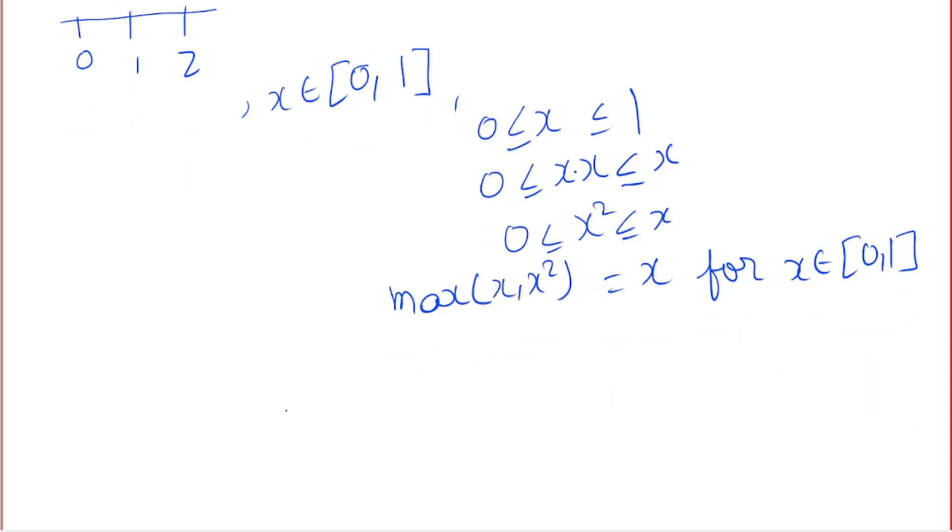Let's consider the region when x lies between one to two. So when x lies between one to two, x squared is greater than x, so our maximum of x and x squared is x squared.